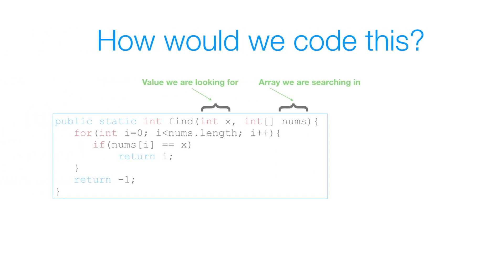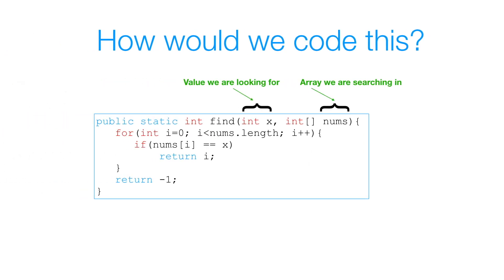Now, how would this look like in code? Here we have a method called find. It has two parameters. The first parameter is x — it'll be the data we're looking for. Our second parameter, nums, is going to be the array we're going to search for that data in. The first thing we have inside this method is a for loop. It starts at index 0 and goes up until the end of the array, incrementing by 1 every time.